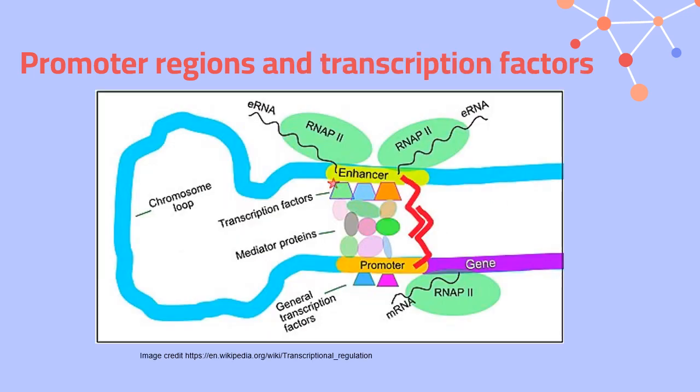That promoter region all by itself isn't quite enough to attract the RNA polymerase and get it to bind. We also have lots of transcription factors that will bind, and these help us to regulate transcription. Sometimes we have factors that will repress transcription, sometimes we have factors that will promote transcription. These extra molecules help us regulate when we activate genes and when we deactivate genes. When we do activate them, RNA polymerase can bind to the promoter region and transcribe the gene.